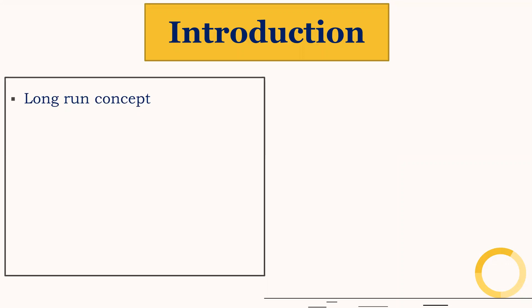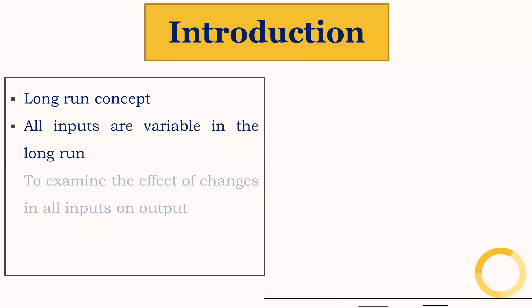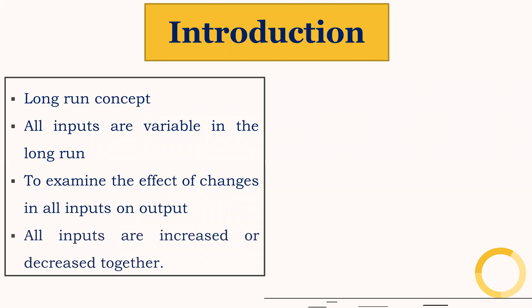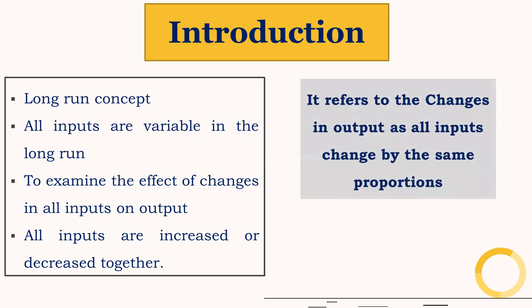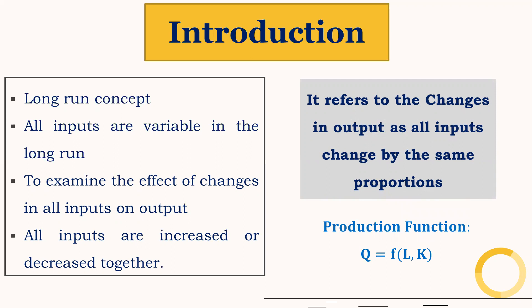Laws of returns to scale is a long-run concept, so all inputs are variable in the long run. To examine the effect of changes in all inputs on output, we need to understand the laws of returns to scale — here all inputs are increased or decreased together. It refers to changes in output as all inputs change by the same proportions. Our production function has two inputs: labor and capital, and both inputs are variable in the long run.